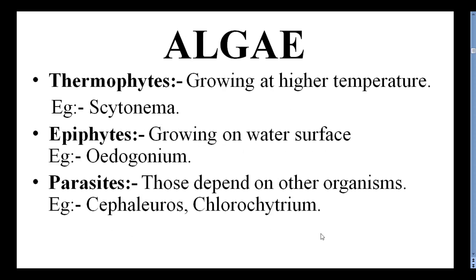Thermophytes can grow at higher temperatures, example Cytoonema. Epiphytes grow on water surfaces, example Oedogonium. Parasites depend on other organisms for food material, example Cephalurus and Chlorochytrium.